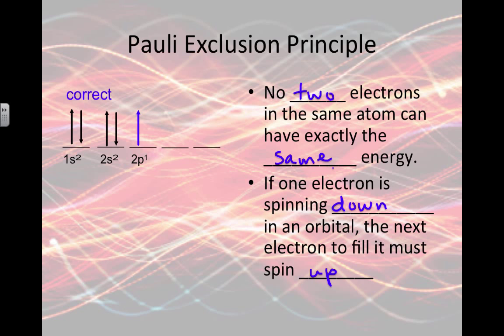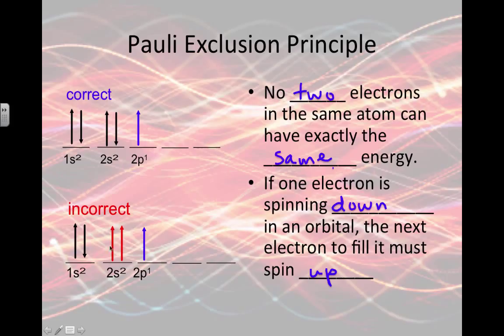Here's the correct way to write an Aufbau diagram for boron. An incorrect way would be to put the two electrons spinning in the same direction. That would not be okay. They can't be in that space together.